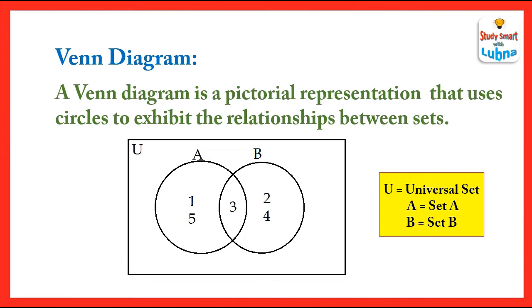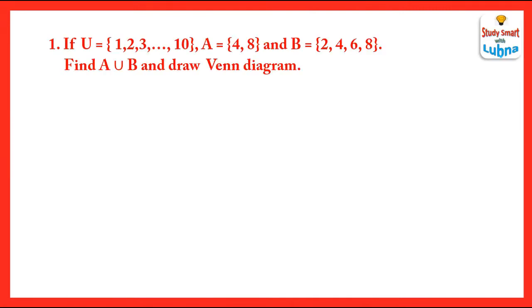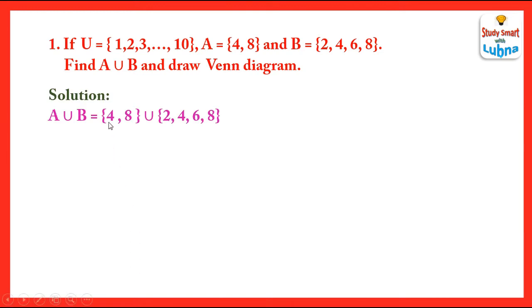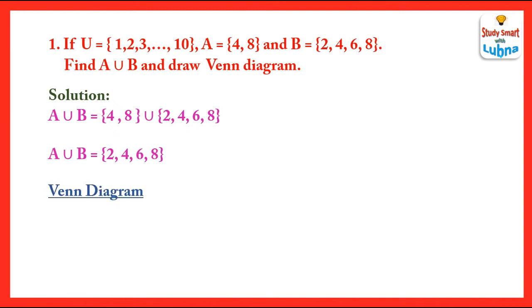Now we are going to discuss the Venn diagram of union of two sets in detail. Here is a question: if the universal set is equal to 1 through 10, and set A has elements 4 and 8, while set B has elements 2, 4, 6, 8, we have to find A union B and then draw its Venn diagram. We are going to combine the elements of A, which are 4 and 8, and elements of B, which are 2, 4, 6, 8. So A union B is {2, 4, 6, 8}. Now we are going to draw its Venn diagram.